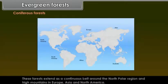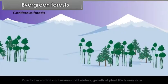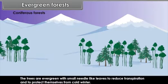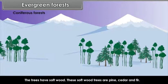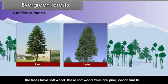Coniferous forests: These forests extend as a continuous belt around the North Polar region and high mountains in Europe, Asia and North America. Due to low rainfall and severe cold winters, growth of plant life is very slow. The trees are evergreen with small needle-like leaves to reduce transpiration and to protect themselves from cold winter. The trees have soft wood. These soft wood trees are pine, cedar and fir.